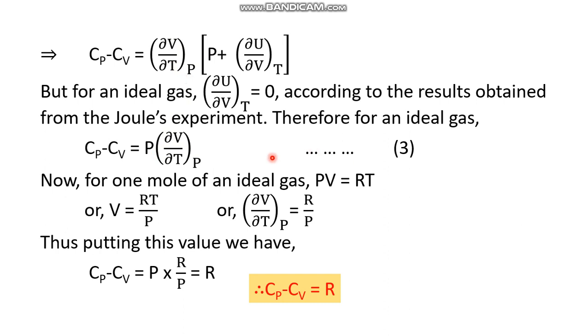Now, as I have said, we have to take the help of the ideal gas equation: PV equals nRT. For one mole of ideal gas, it becomes PV equals RT, or V equals RT by P, or del V by del T at constant P becomes equal to R by P. So simply put this value R by P in place of del V by del T at constant P. In place of del V by del T at constant P, we are putting here R by P—P and P cancelled, only R is remaining. So it is proved that Cp minus Cv equals R.